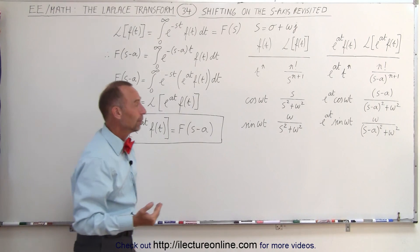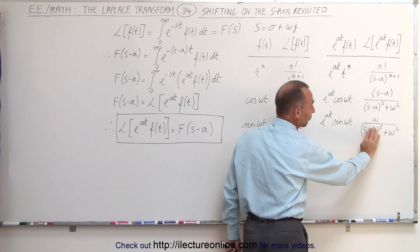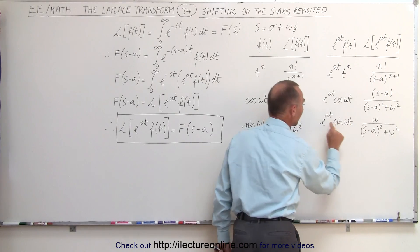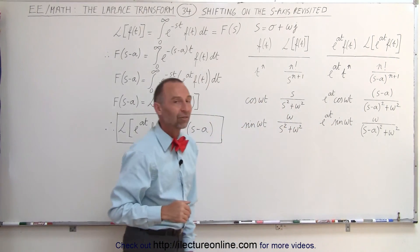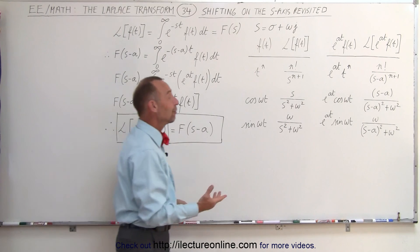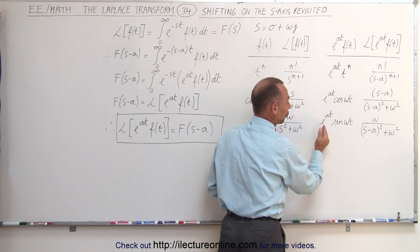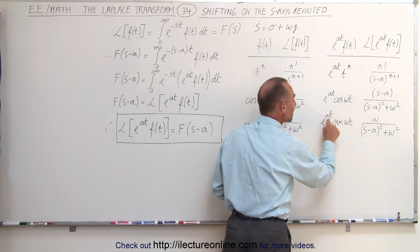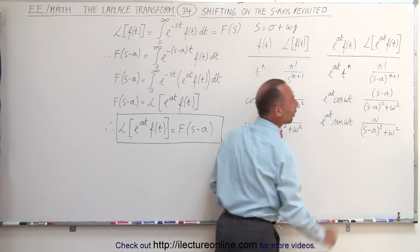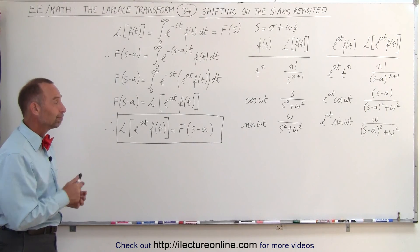This is enormously useful, because if we have something like this in the S domain and we want to find the inverse transform, all we have to do is say: if that minus A wasn't there, it clearly looks like a sine when we convert it back, but the S minus A means we simply have to add the E to the A T term when we do the inverse Laplace transform. Every time we take the inverse Laplace transform and there's an S minus A or S plus A, all we have to do is add that additional term in the time domain. If it's a minus A, we write E to the A T; if it's a plus A, we write E to the minus A T, multiplied times the function we would get if that plus or minus A was not there. We're going to use that a lot in our future videos.